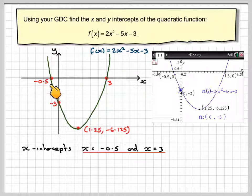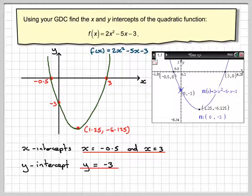The x intercepts will be these two here, -0.5 and 3, and the y intercept will be y = -3.